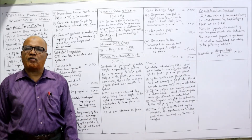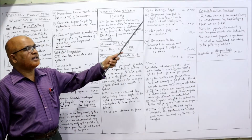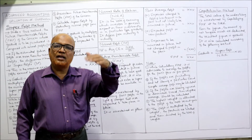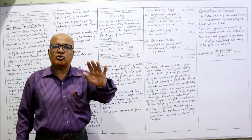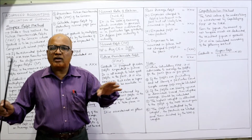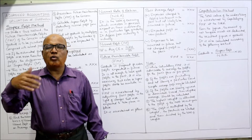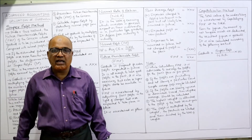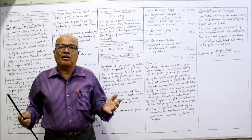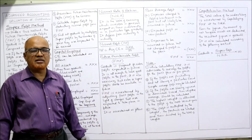FMP is ascertained by adjusting past average profits for expected future changes. We take the past average profit, then add back expenses that were charged in the past but are not expected to be incurred in future, and add any extra profit expected from new products or new activities. Then we deduct any new expenses that will be incurred in future but were not incurred in the past. This gives us the future maintainable profit.